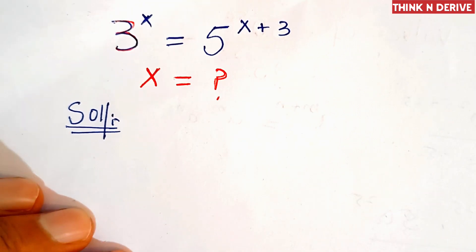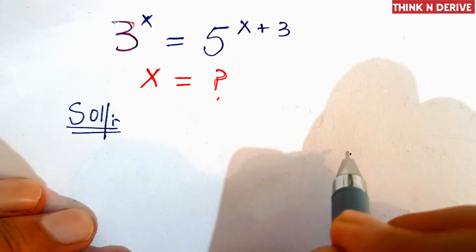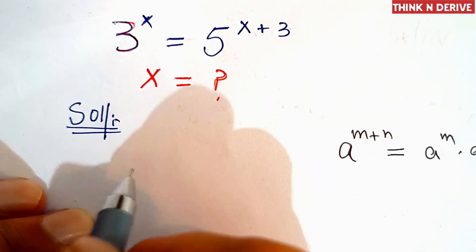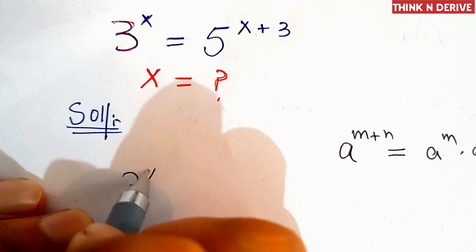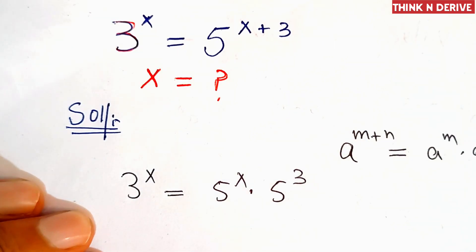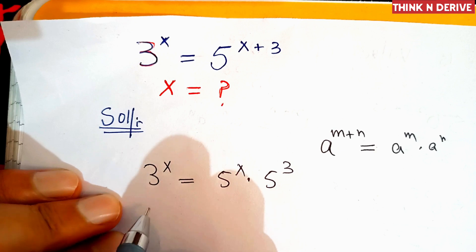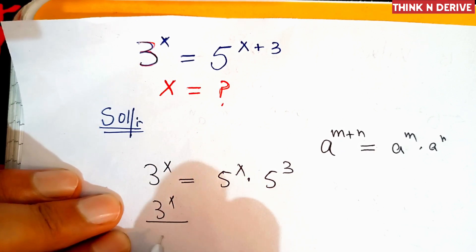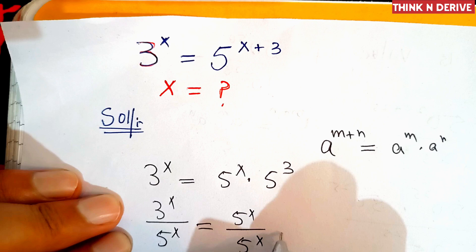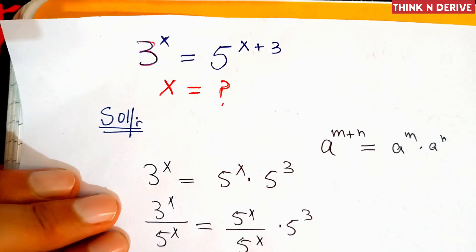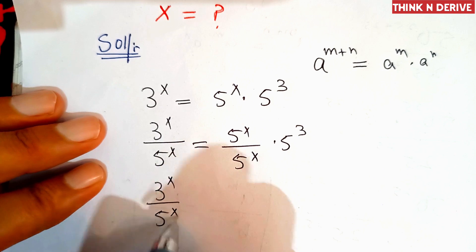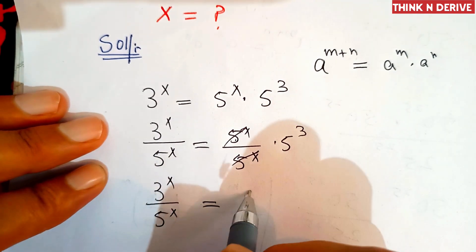In the first step we'll apply the formula: a power m plus n is equal to a power m into a power n. So we can write: 3 power x equal to 5 power x into 5 power 3. Now divide both sides by 5 power x. This gives 3 power x divided by 5 power x equal to 5 cube.